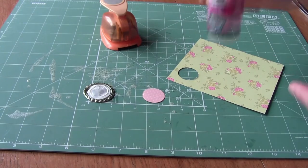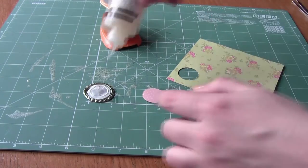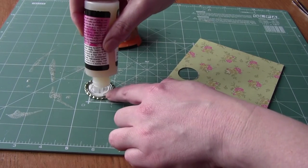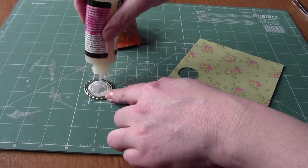We're going to use glossy accents to attach the circle to the flattened bottle cap and also to give it a lovely shiny finish once the circle is in place.